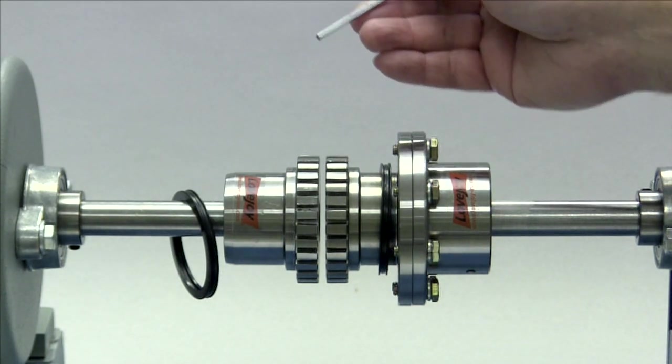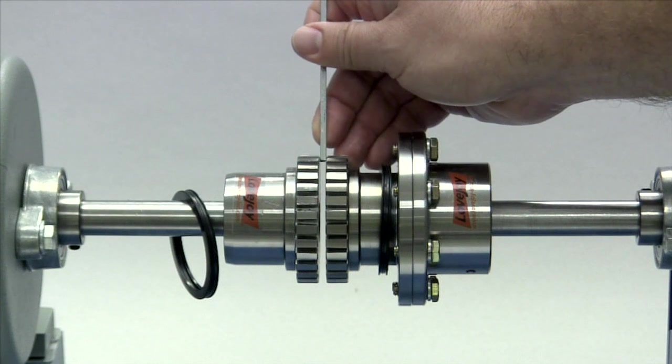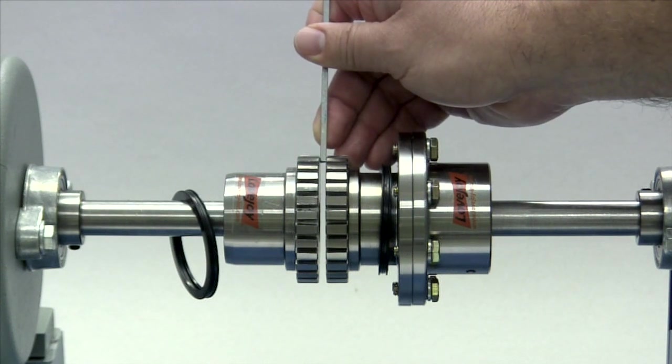Measure the gap between the face of the hubs to ensure this shaft separation matches the G or gap dimension as specified in the installation guide.